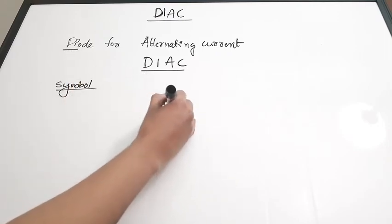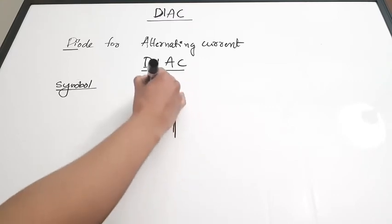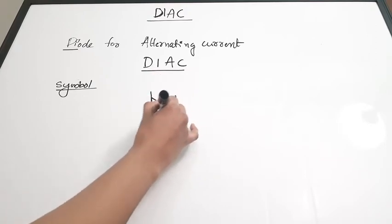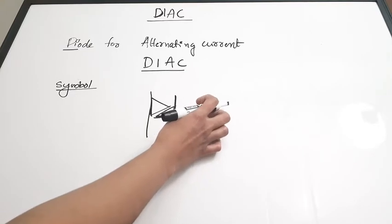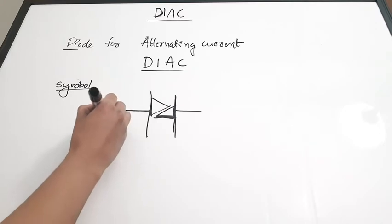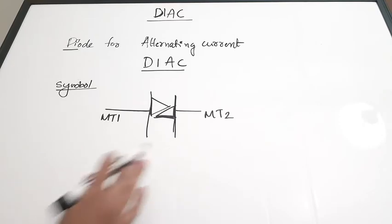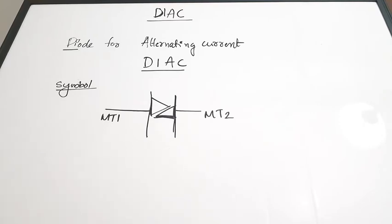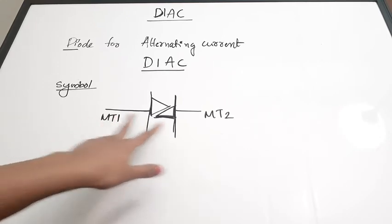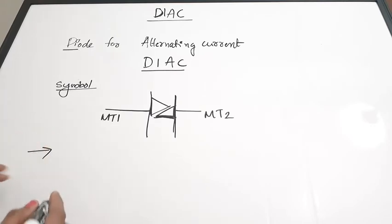The symbol of DIAC is somewhat similar to TRIAC, but the key difference is that there are only two terminals in DIAC. We know that TRIAC has three terminals, whereas DIAC has only two terminals: MT1 and MT2. The most important application of a DIAC is that it is used for triggering of TRIAC.